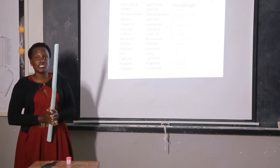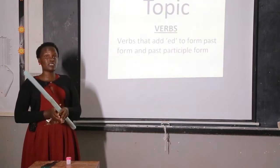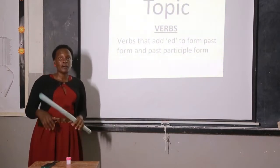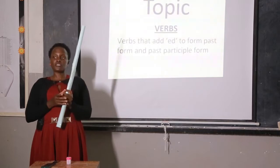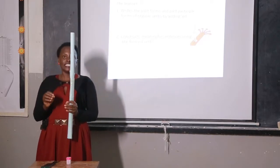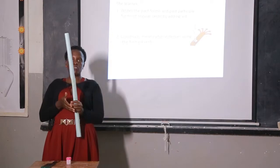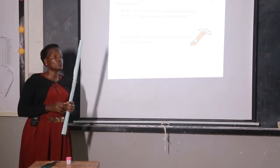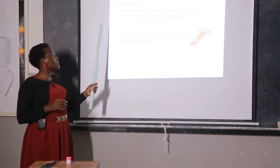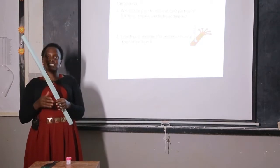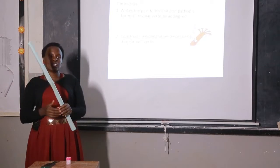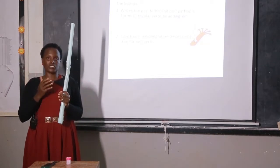Now we are going to today's lesson. We are still continuing with regular verbs, but we are looking at verbs that add ED to form the past form and the past participle form. These regular verbs usually end with consonant sounds. By the end of this lesson, you should be able to write past forms and past participle forms of regular verbs that end with consonants by adding ED, and use those words to construct meaningful sentences with correct grammar.